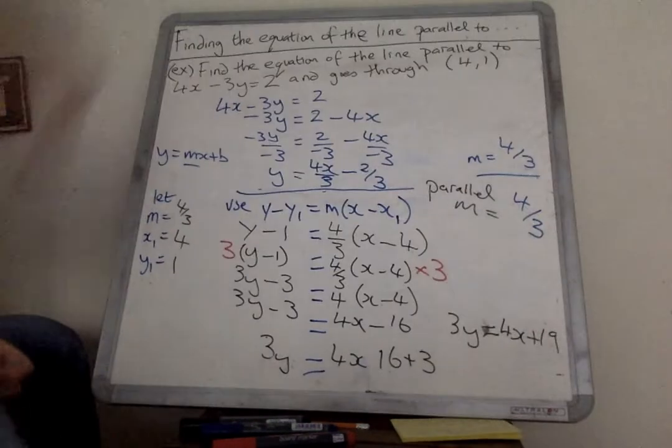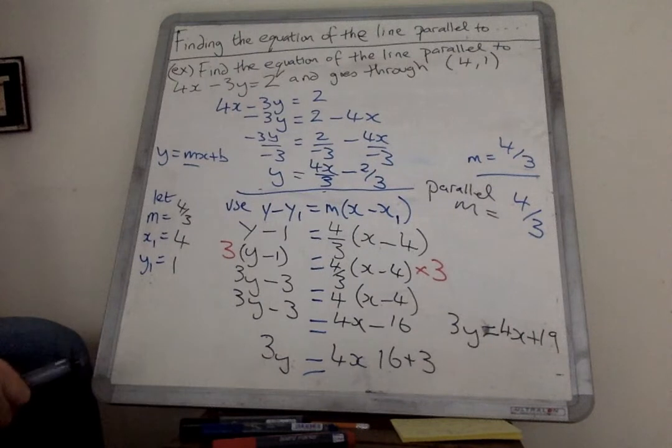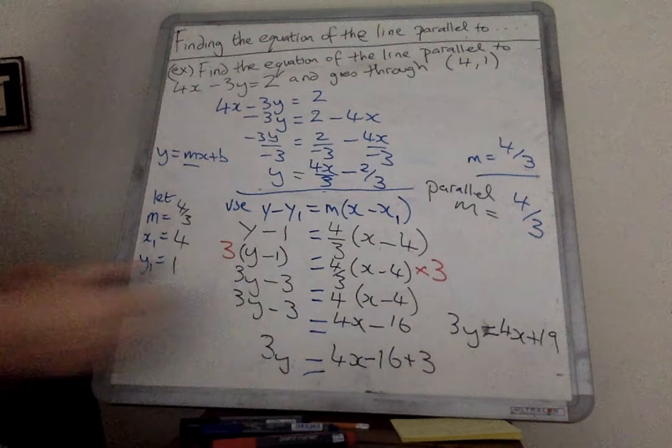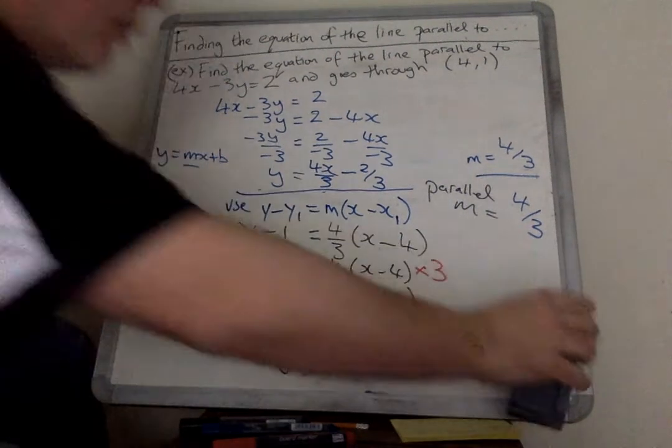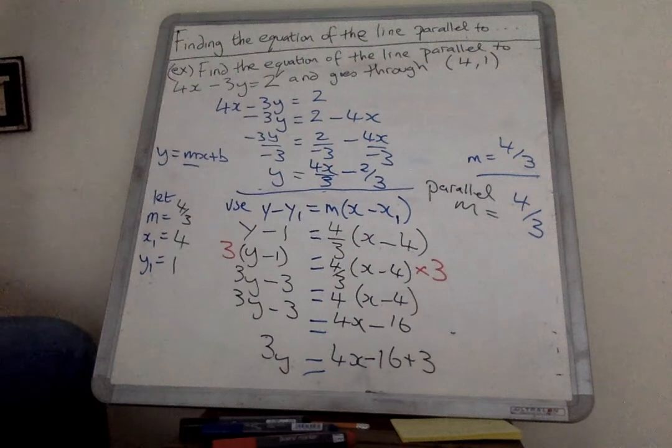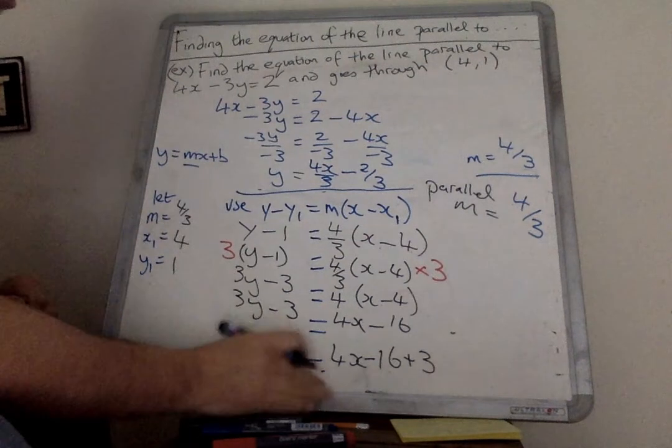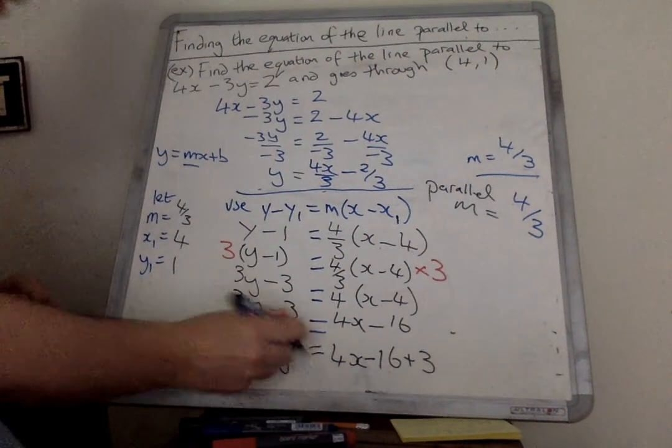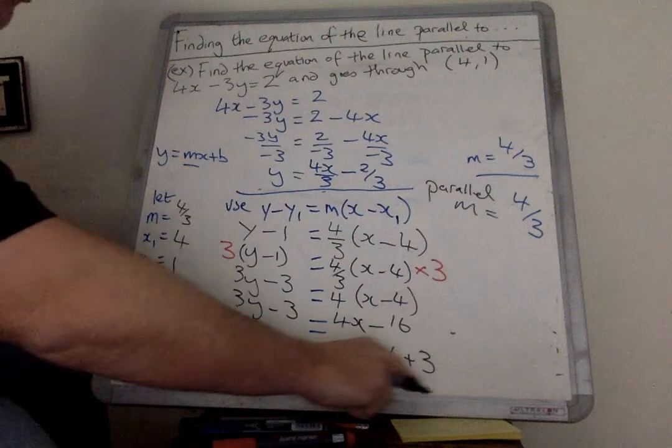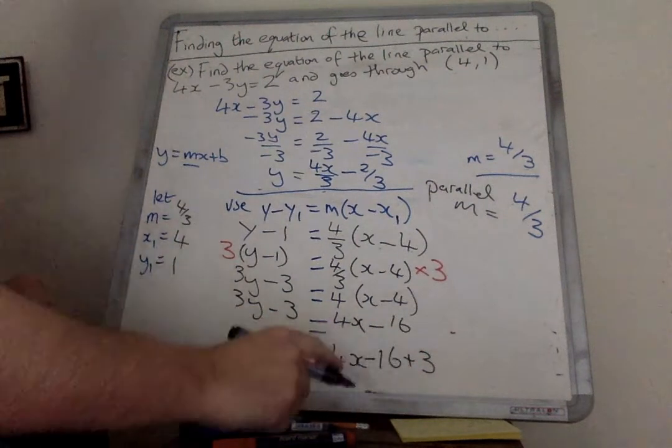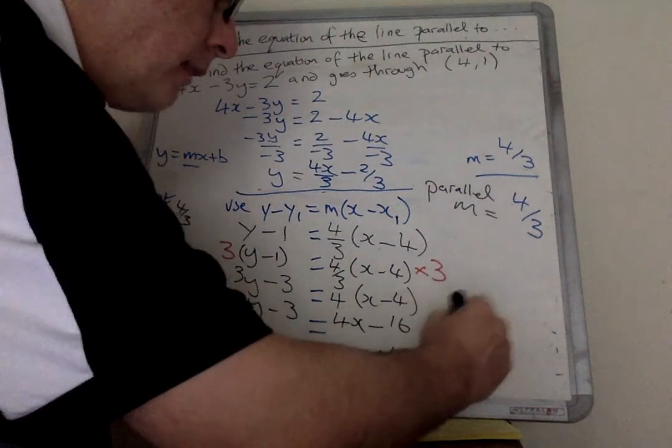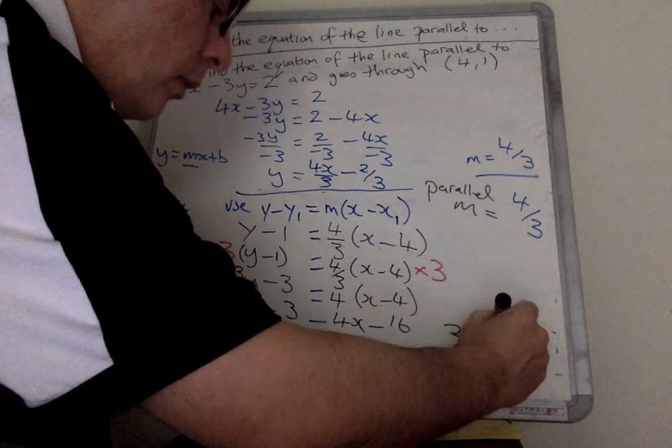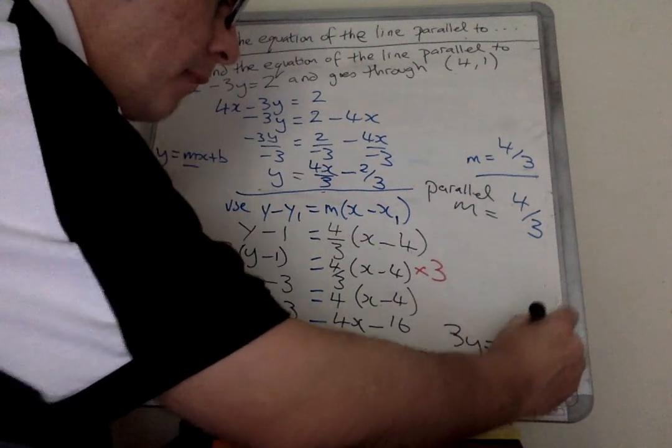I've made a mistake. Oh dear, I have made a mistake. Minus sign. I knew there was a mistake there. Let's just change that, trying to do too much rushing. So let's just tidy that up a little bit. 4x minus 16 plus 3. Minus 16 plus 3 is minus 13. So the final answer is 3y equals 4x minus 13.